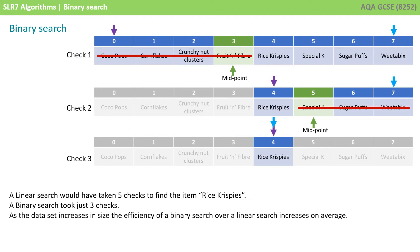Of course, there are some situations where the binary search is not better and you might be able to spot them. For example, if the item we're looking for is the first one in the list. However, this is not usually the case and certainly not with larger datasets.